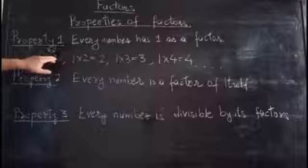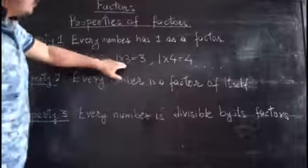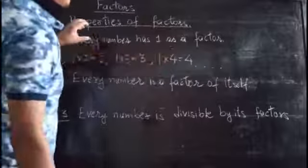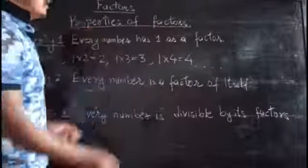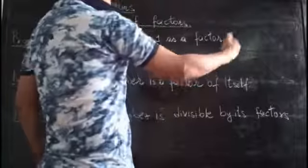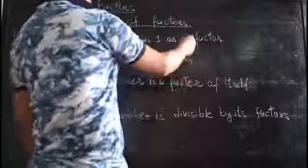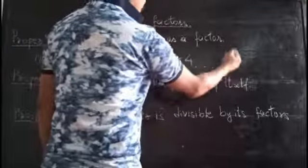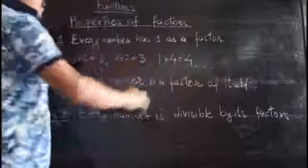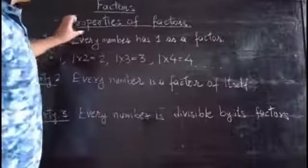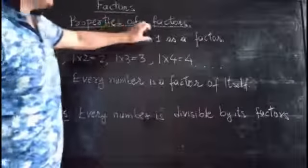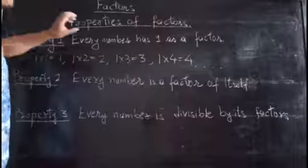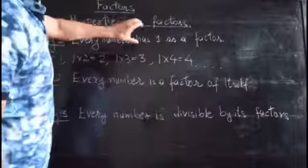One, two, three, four — one is a factor of all these numbers. Even if you multiply two thousand, one will be a factor of that number. Whether it's a thousand, nine hundred ninety-nine, or whichever number you take, every number has one as a factor.